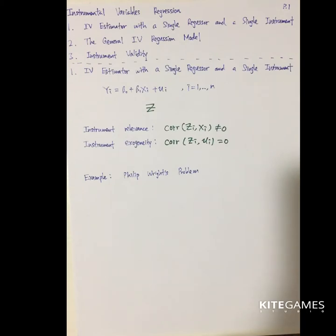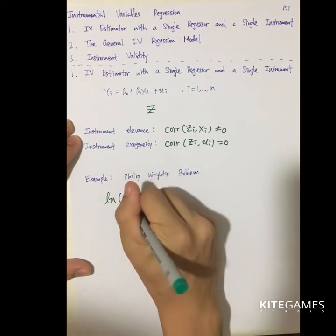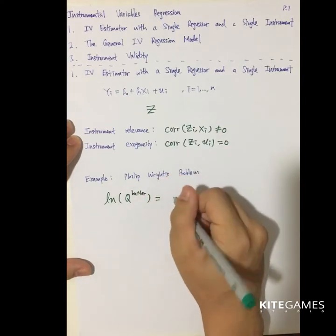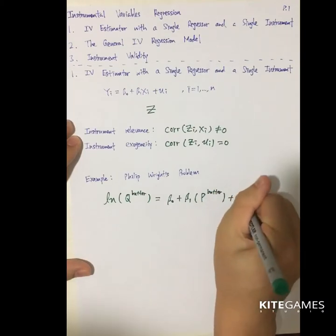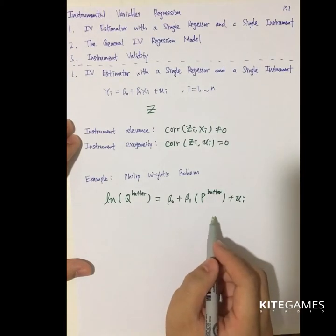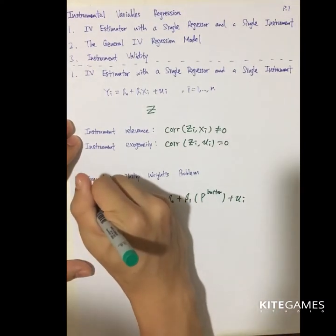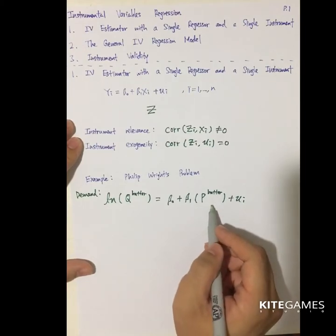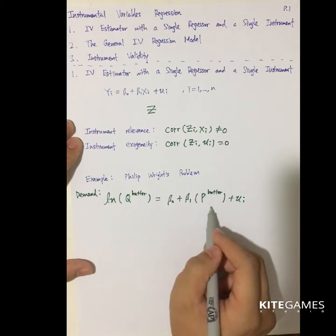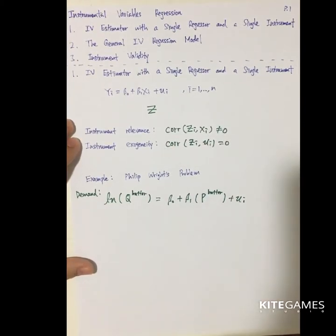Phillips and Wright were economists working in the 1920s. They were investigating the demand curve for butter. They modeled: log(butter quantity) equals beta_0 plus beta_1 times the price of butter plus u_i. If you just run this regression, it is very problematic, because there are many other factors correlated with price that also determine quantity — for example, supply will affect price. Therefore, the correlation between P and u is not equal to zero, and you suffer from omitted variable bias.